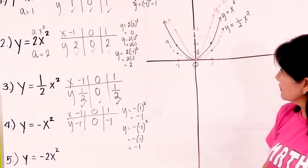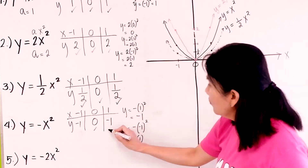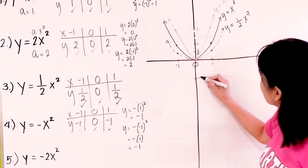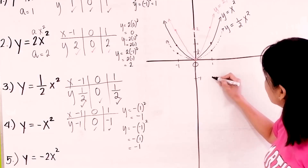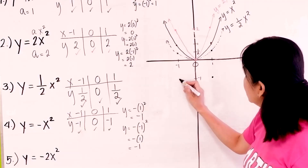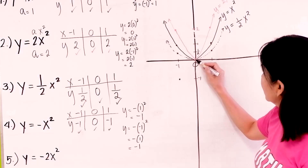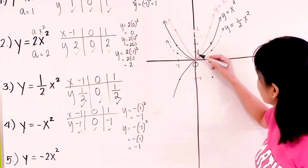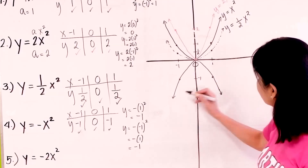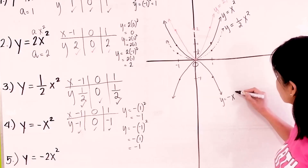Let's plot them. (0, 0) is here. (1, negative 1) — this is 1 and negative 1 is somewhere here, so (1, negative 1) will be here. (Negative 1, negative 1) will be here. Connect these three points — so this is now the graph of y equals negative x squared.